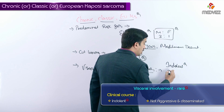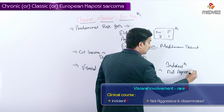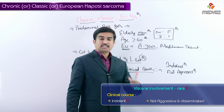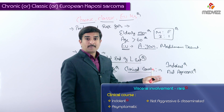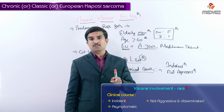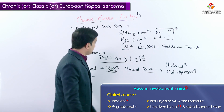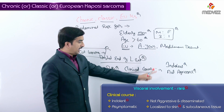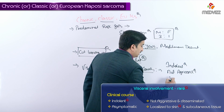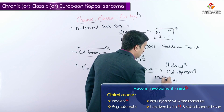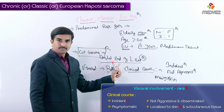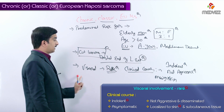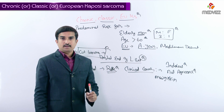These tumors are typically asymptomatic and remain localized to the skin and subcutaneous tissue. That is why cutaneous lesions are more common in the European type, most commonly at the distal end of the lower extremities, and visceral involvement is rare.